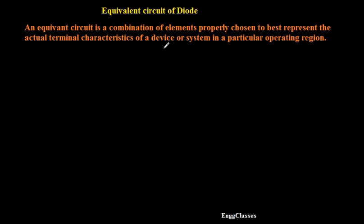For example, if I consider the VI characteristics of a diode and I want to approximate it, I want to write the equivalent circuit for that without actually affecting the terminal characteristics of a diode. Whenever I consider the equivalent circuit of a diode, basically there are three types.